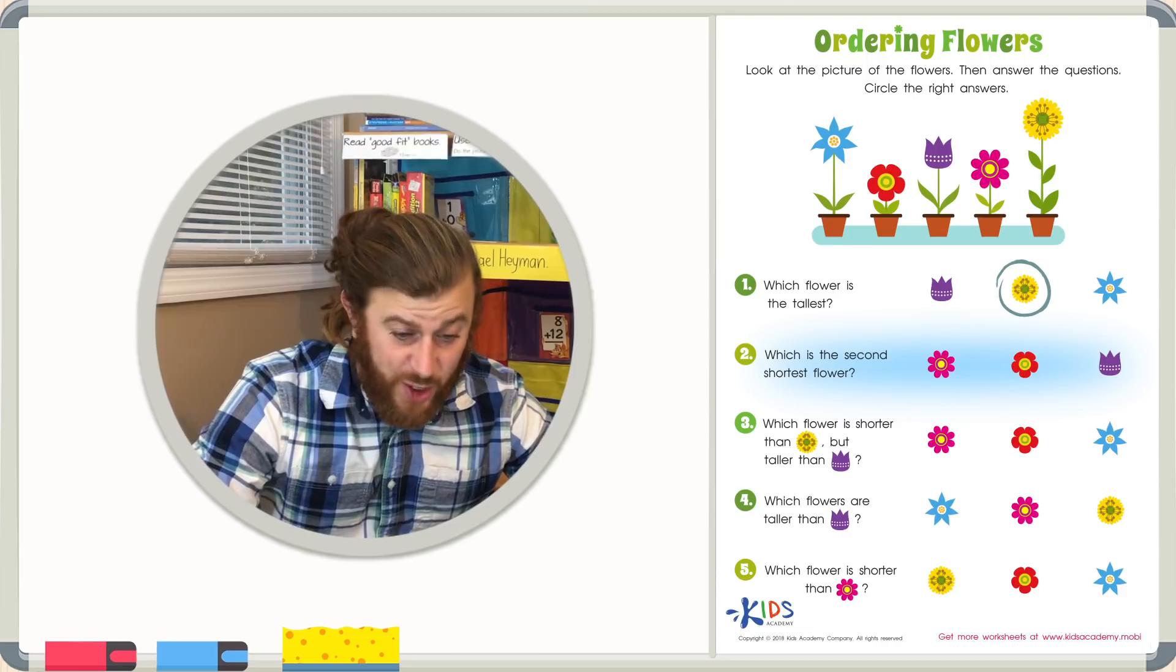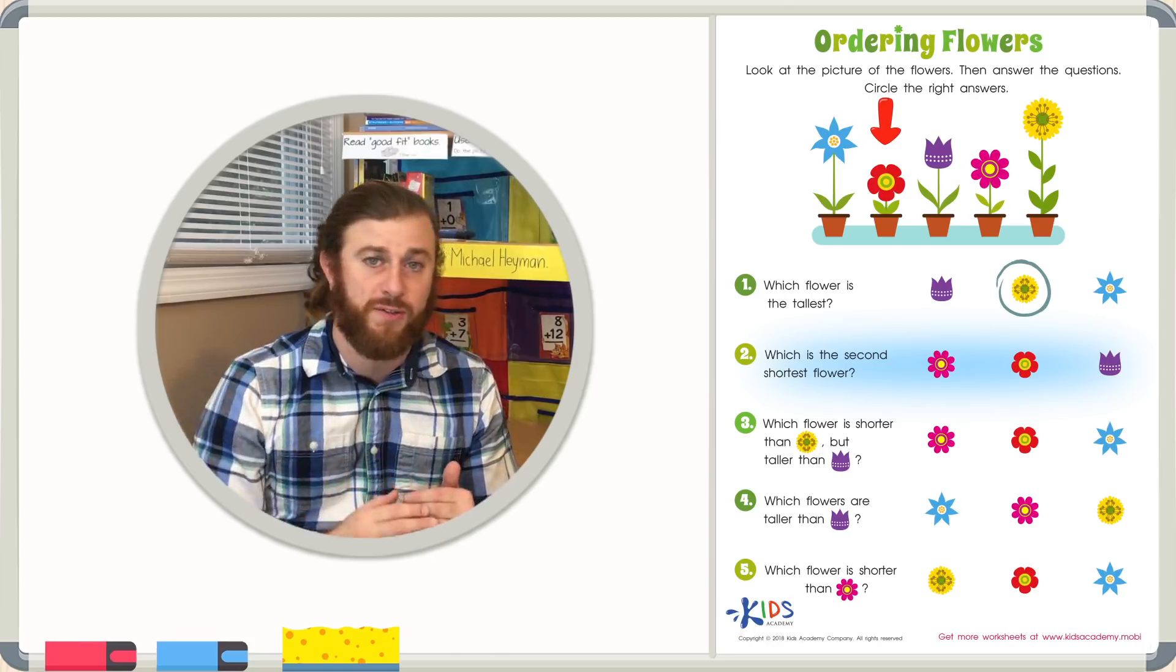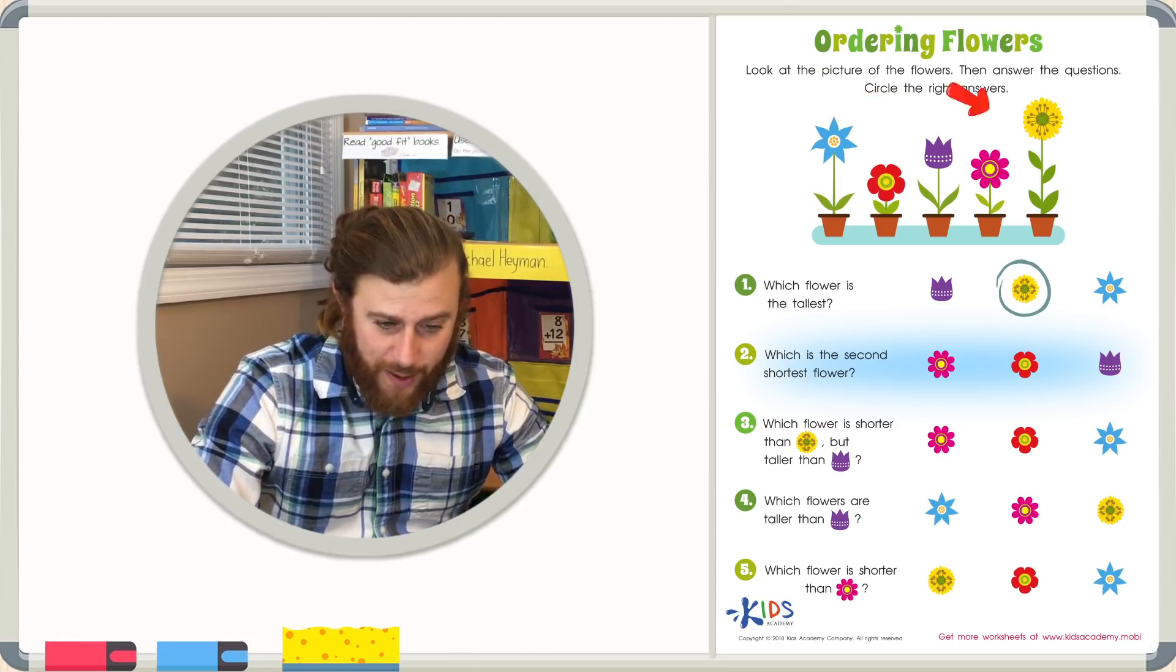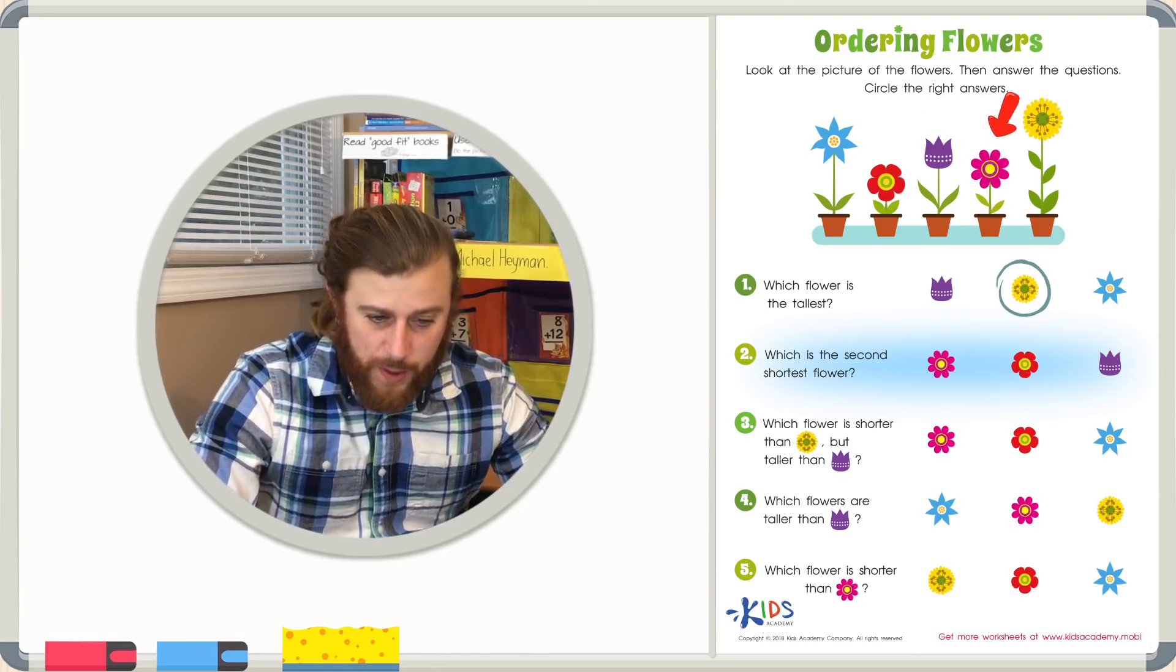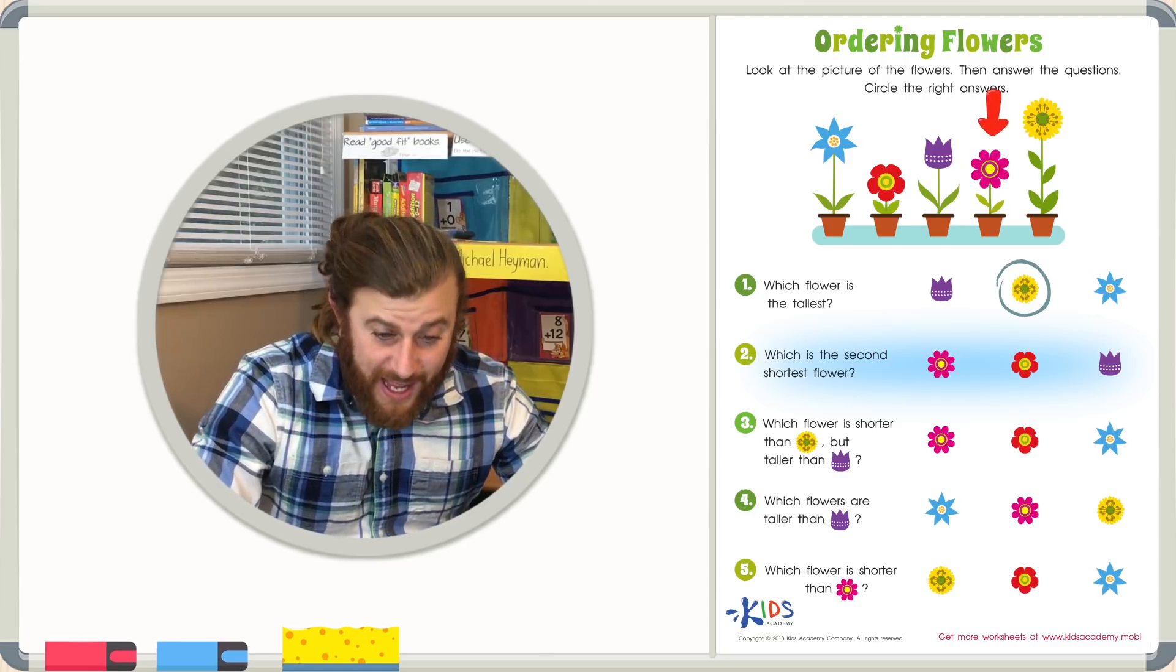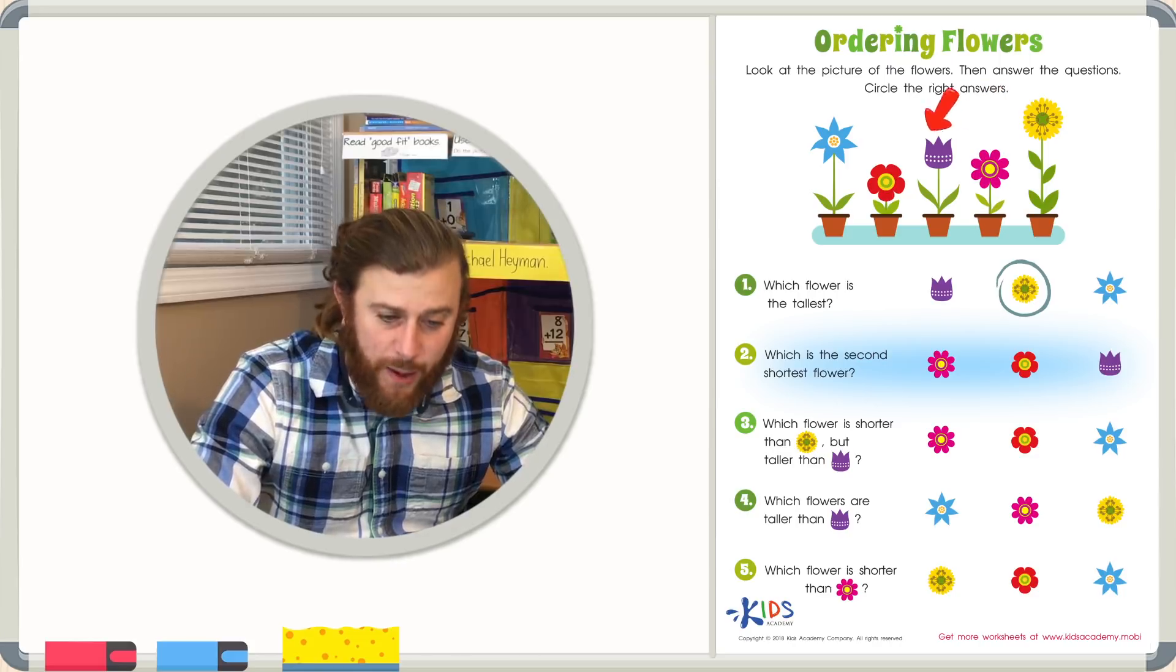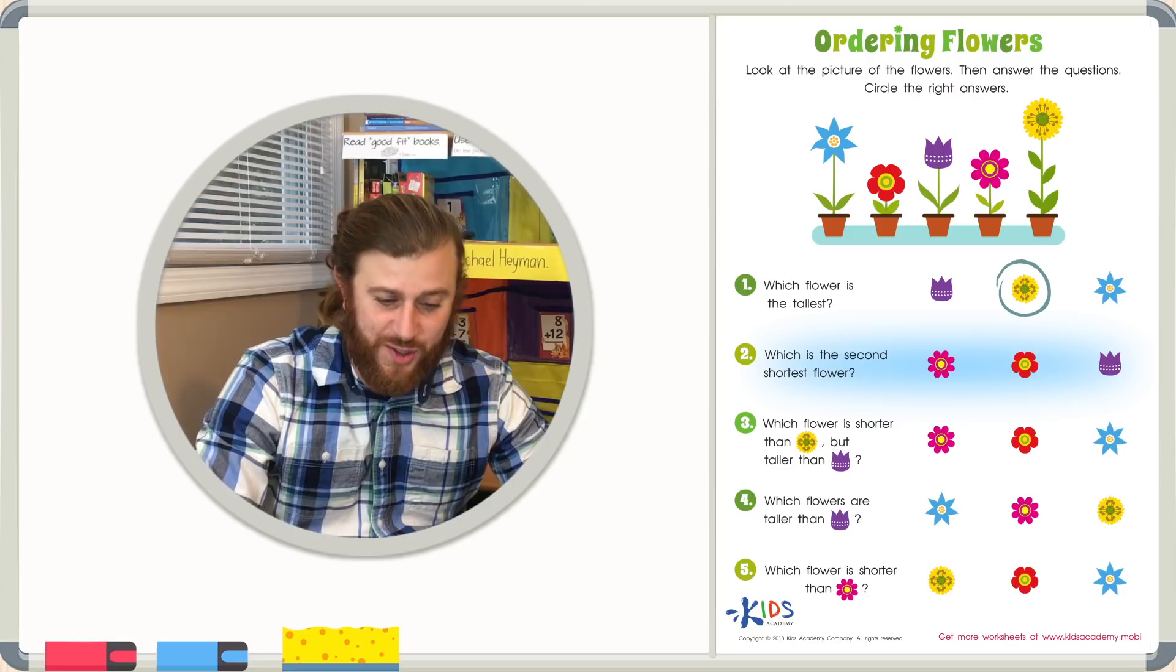Well, the shortest flower is the red flower right here. So which is the next shortest flower? The blue flower is shorter than the yellow flower, but it's still taller than the purple flower and the pink flower. The pink flower is the second shortest flower. It is shorter than all the other flowers besides the red flower. The second shortest flower is the pink flower. Let's go ahead and circle the pink flower.